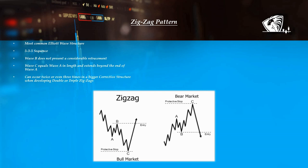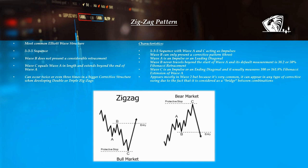The zigzag is the most common Elliott wave structure, which always presents a 5-3-5 sequence, with wave B not presenting a considerable retracement. Wave C often equals wave A in its length, hence the reason why it extends beyond the end of wave A. It is known that zigzags occur twice or even three times, forming combinations called double and triple zigzags. The 5-3-5 sequence has wave A and wave C acting as impulses.